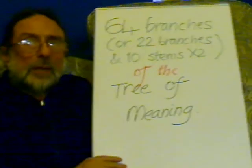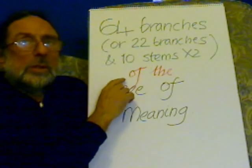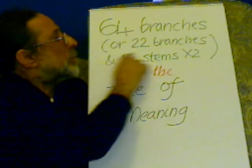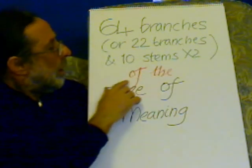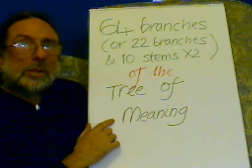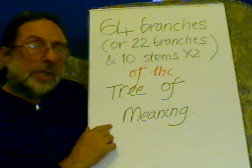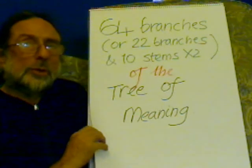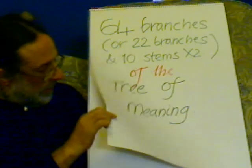These steps are the 64 branches — or something in terms of 22 branches with 10 stems, 10 celestial stems — of the tree of meaning. That's what they all individually show, because obviously using words, that's what we're going into: meaning, understanding the meaning.